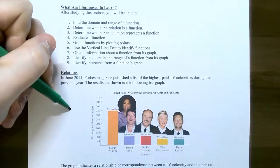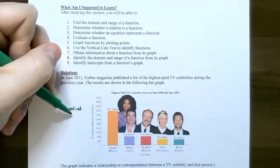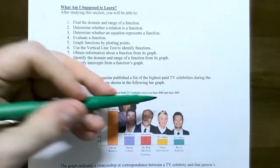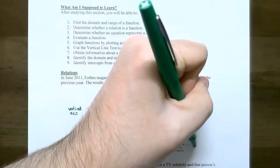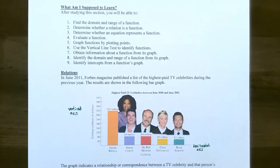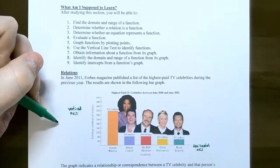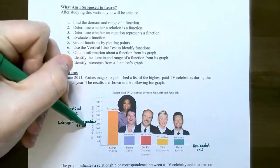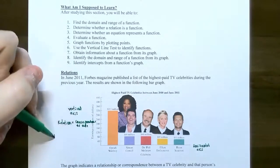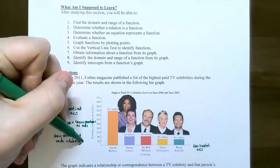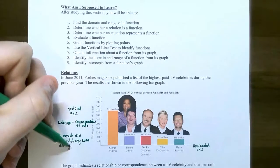On the vertical axis — which is not called the y-axis unless you're actually describing points — we have the earnings in millions of dollars for the highest paid TV celebrities between June 2010 and June 2011. On the horizontal axis we have the TV celebrities: Oprah, Simon Cowell, Dr. Phil, Ellen DeGeneres, and Ryan Seacrest. The correspondence in this problem is how much did each TV celebrity earn during the year in millions of dollars.